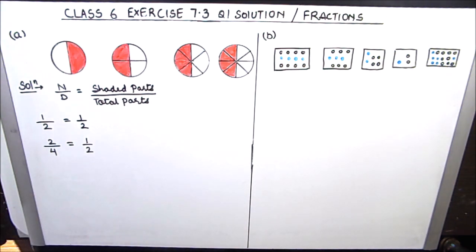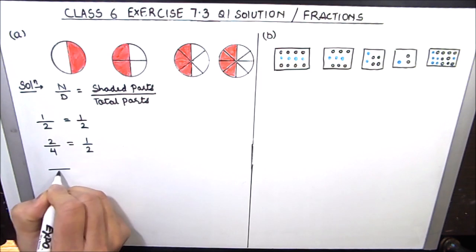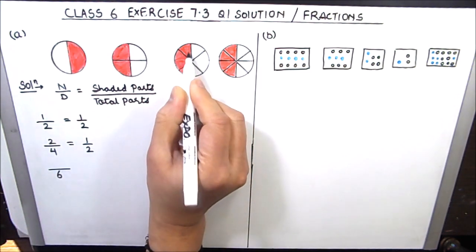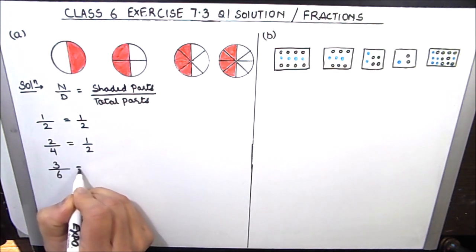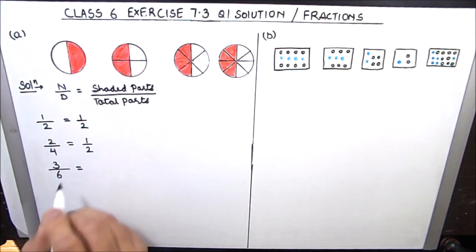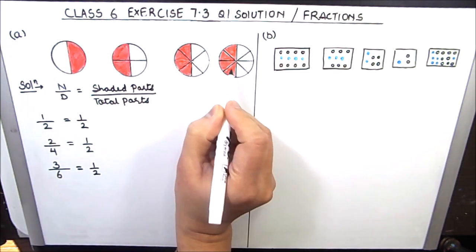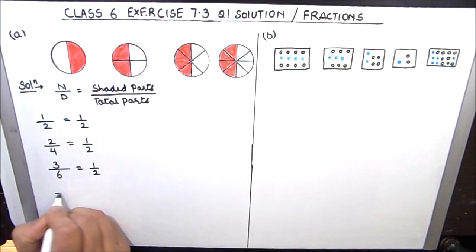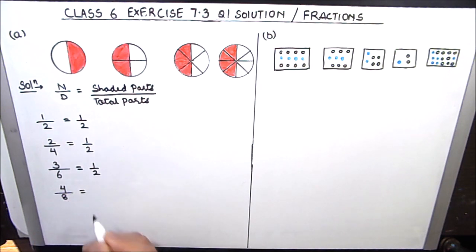The next circle has 6 equal parts and out of 6, three parts are shaded. So 3 by 6 is the fraction, which we can write in simplest form as 1 by 2. The last circle has 8 equal parts and out of 8, four parts are shaded. So the fraction is 4 by 8, which is reduced to 1 by 2.